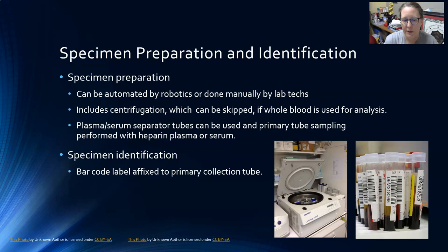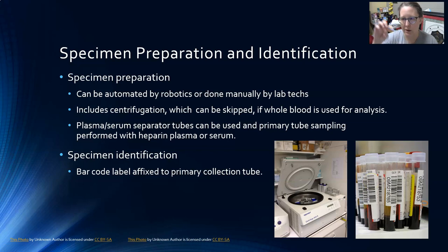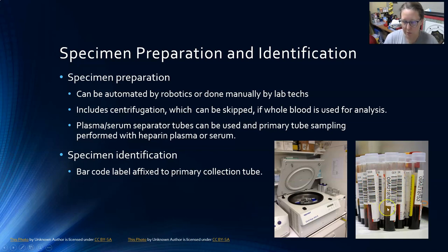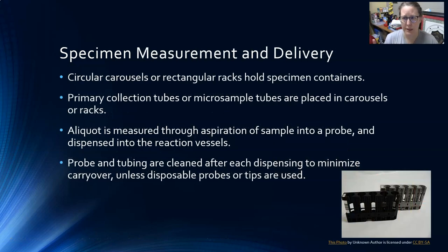The specimen is identified via a barcode labeled and affixed to the primary collection tube, done by the phlebotomist at bedside right after collection. This barcode should be placed vertically on the tube so that when a tube is loaded on a rack on an analyzer, the full barcode can be read. It should not be placed horizontally, diagonally, or across the top of the tube.